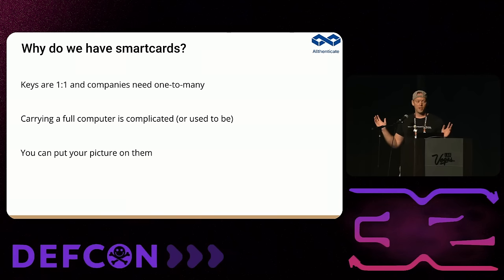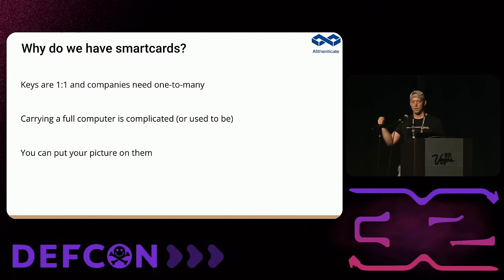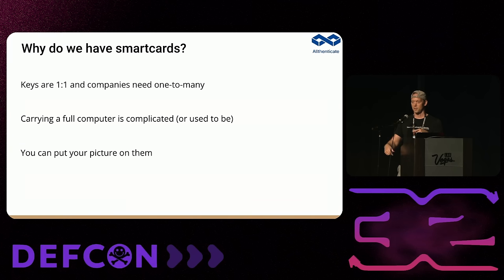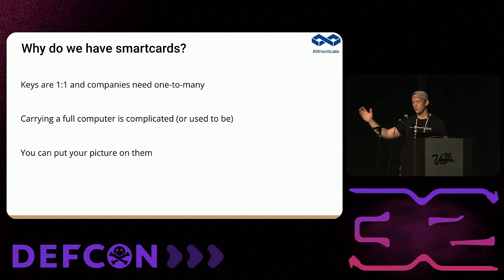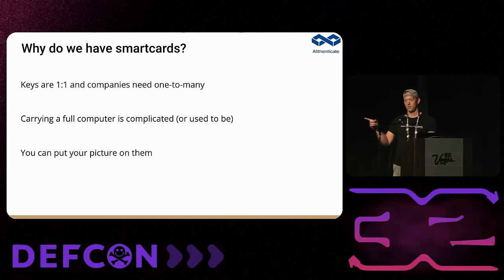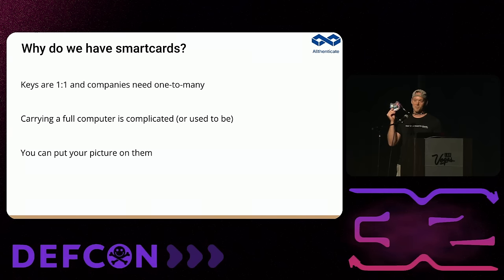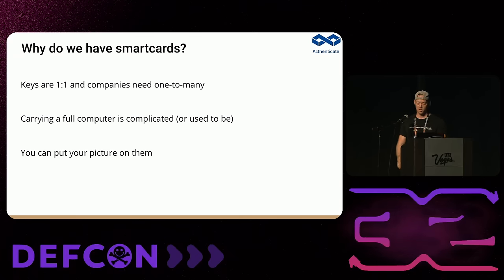So before we break all these, why did we build them in the first place? Physical keys are one-to-one — there's one key that opens one door. If I want 1,000 people to open that door, they all have the exact same key, and if one of those 1,000 people is fired, I have to rekey the door and give out 999 new keys. Smart cards can be one-to-many — many different credentials can open the same door. It used to be complicated to carry a full computer in your pocket, but modern smart cards are little mini computers. And you can put a picture on them — when you come to conferences, there's something around everyone's neck indicating they belong here and should not be escorted out.